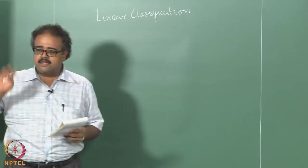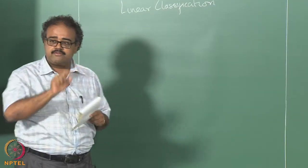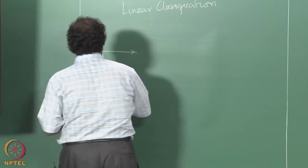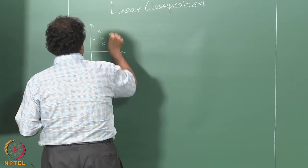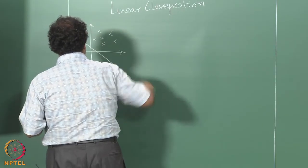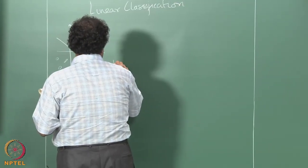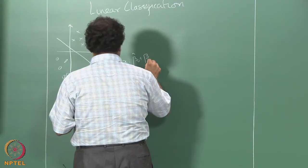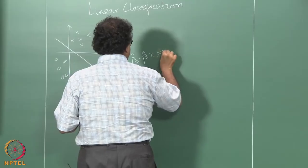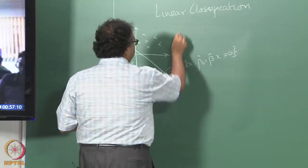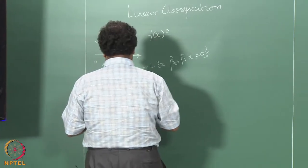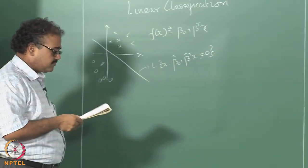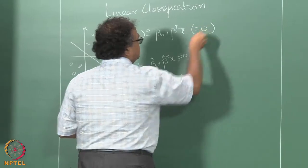We are looking at linear classification and I will quickly remind you of the properties of hyperplanes that we wrote down in the last class. We will denote by f of x, and the hyperplane is essentially given by solving f of x equal to 0.